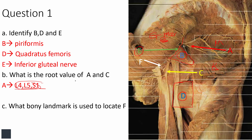Structure C emerges from the infrapiriformic compartment, medial to the large nerve we'll call S. You can see it coming to lie on top of this hamstring muscle, telling you it is a cutaneous nerve. That cutaneous nerve is the posterior femoral cutaneous nerve, also called the posterior cutaneous nerve of the thigh, with root values S1, S2, and S3.